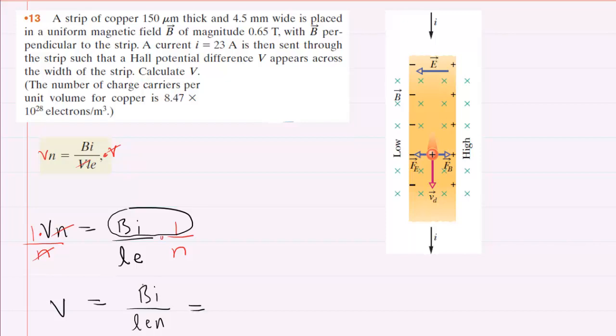Let's take a look. B represents the magnetic field that is given in the question as 0.65 Tesla. So we'll plug that in. I represents the current that is being sent through the strip, and that is given to us as 23 amps.